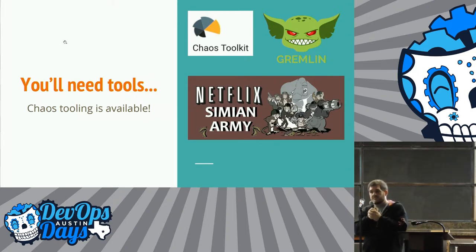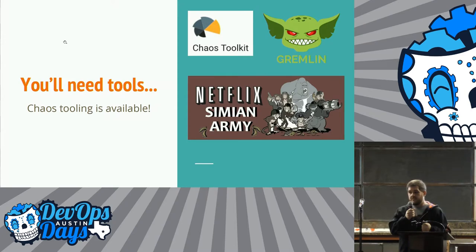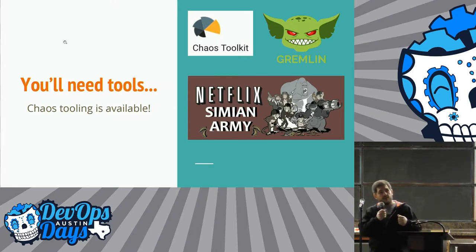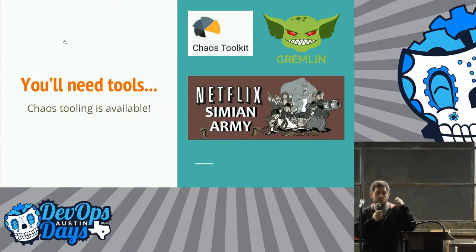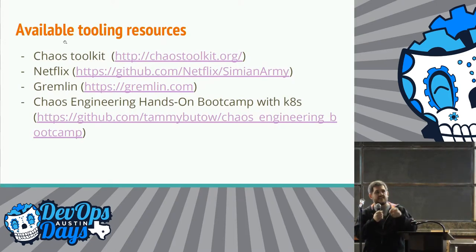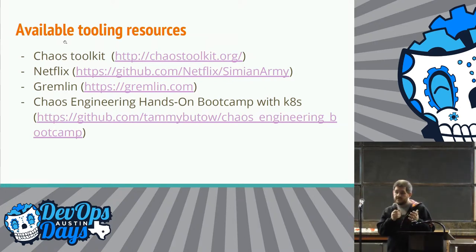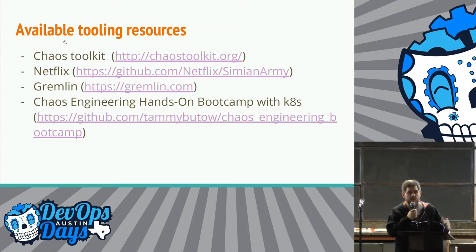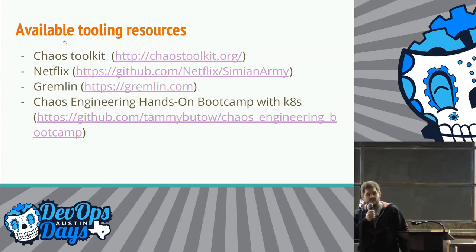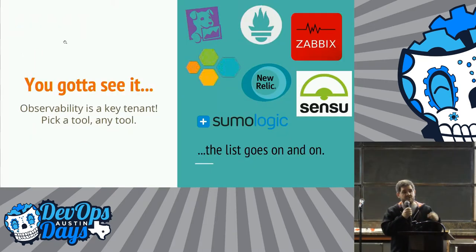You'll need some tools. Chaos tooling is available in many forms. Three big ones the community is really getting behind: Chaos Toolkit, an open source project where you can write scripts to attack specific things like AWS or your servers. There's also Gremlin, and Netflix has opened up theirs as well — fully open source. In 2012 they open-sourced their Chaos Monkey along with their whole Simian Army. There are links in the slides if you want to take a picture. There's also a Chaos Engineering bootcamp GitHub repo — go and try it.